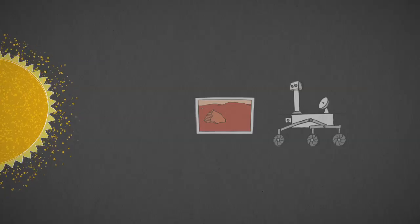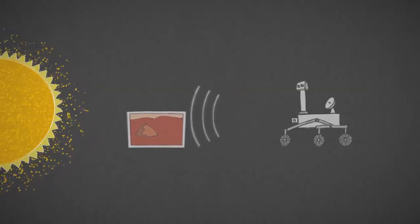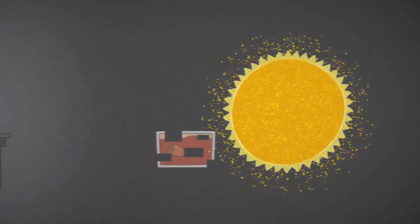If our spacecraft send back signals, charged particles from the Sun could interfere, causing gaps in the data that reach us.